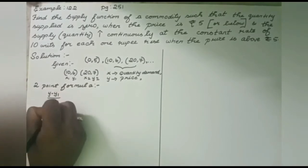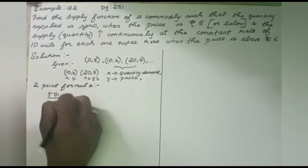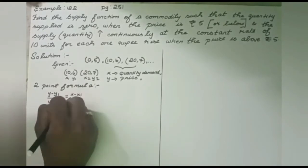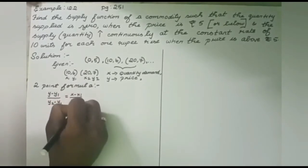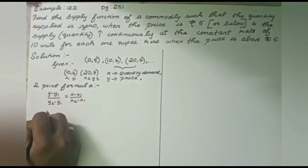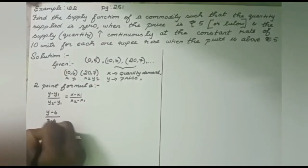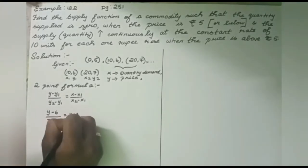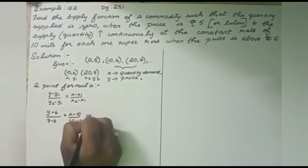In this question, x represents quantity demanded and y represents price. You might ask why x is quantity when in the question, if you read, quantity supplied is mentioned first in words, so that is x. In the second half, price is given, so that is y.